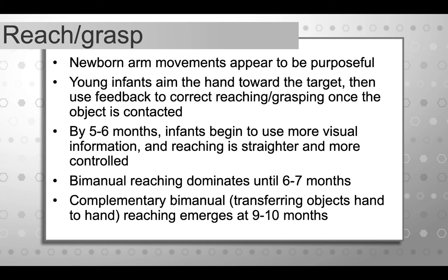Reach and grasp are also really important to understand. Newborns do move their arms, and although it appears random, studies have shown that newborn arm movements actually appear to be purposeful. Very young infants reach by aiming their hand toward the target — just kind of batting — using feedback rather than feed-forward control. They visually find the object, shoot their hand toward it, and then use contact information to refine, producing those jerky end-range movements characteristic of early reach and grasp development.